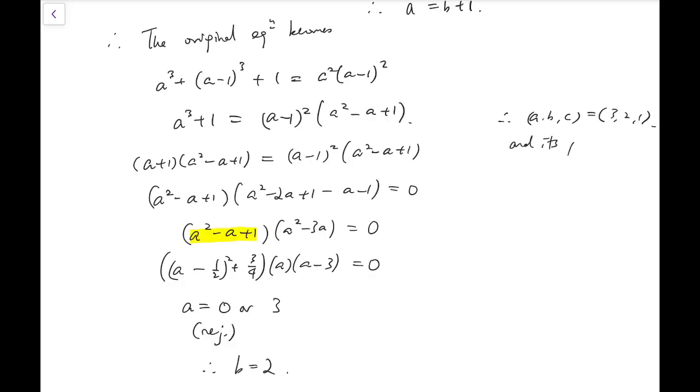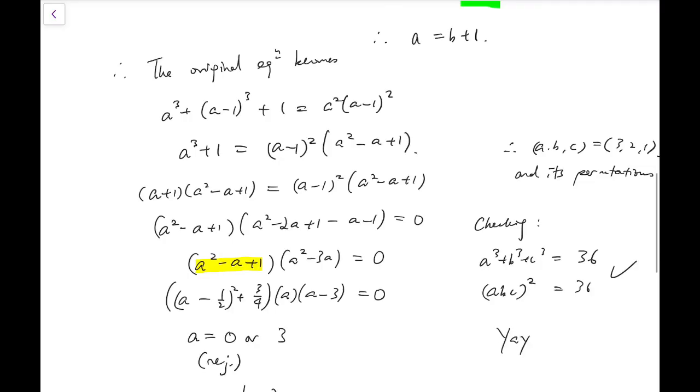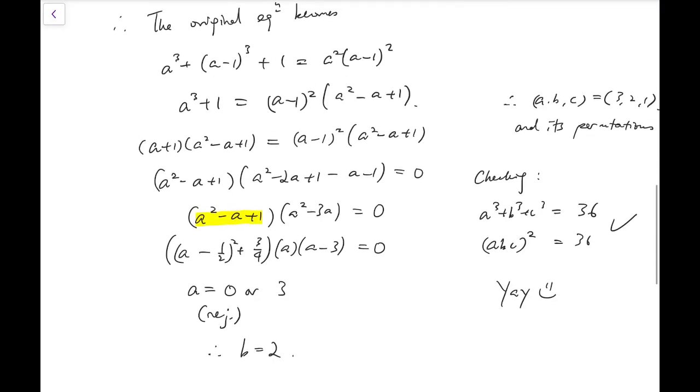So a, b, c are 3, 2, 1 and of course and its permutations. Because we have just assumed that a is the largest one but a of course can also be the smallest one. Now check. In this case, a cubed plus b cubed plus c cubed would then be 36 while a, b, c whole squared is also 36. So it's true. So yeah, we are done.